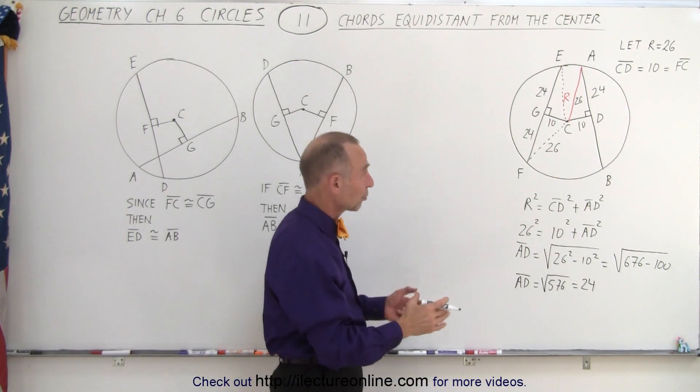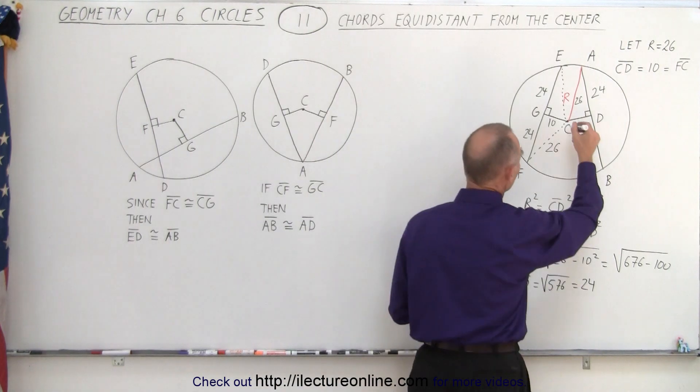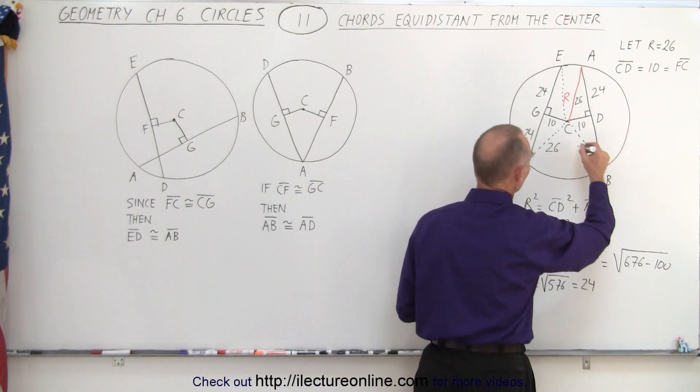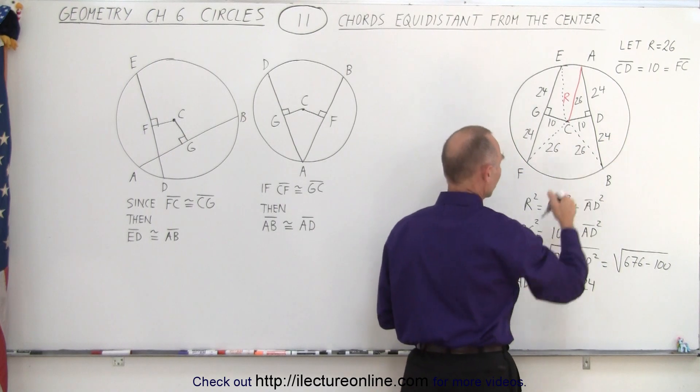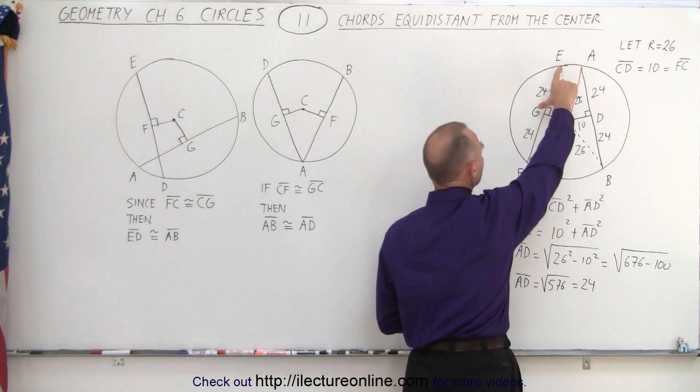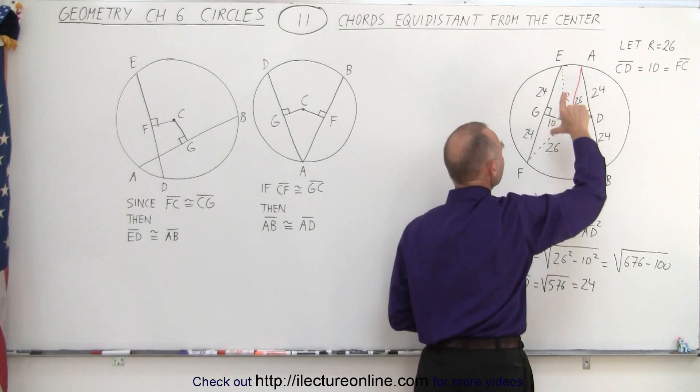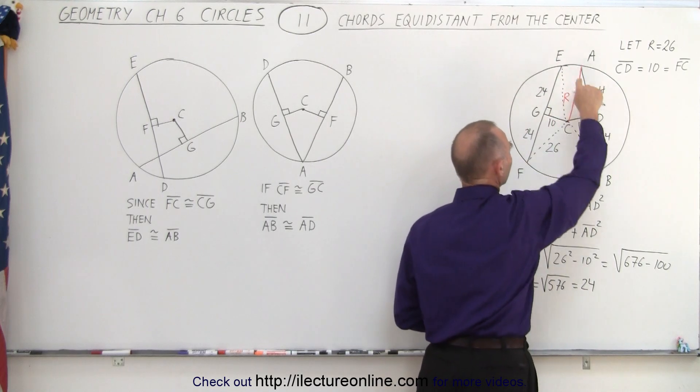So there's this perfect symmetry everywhere and so therefore you can see that you can do the same on the other side. This is 26, this is 10 therefore this will be 24 and notice we can then conclude that EG is congruent to AD and EF is congruent to AB.